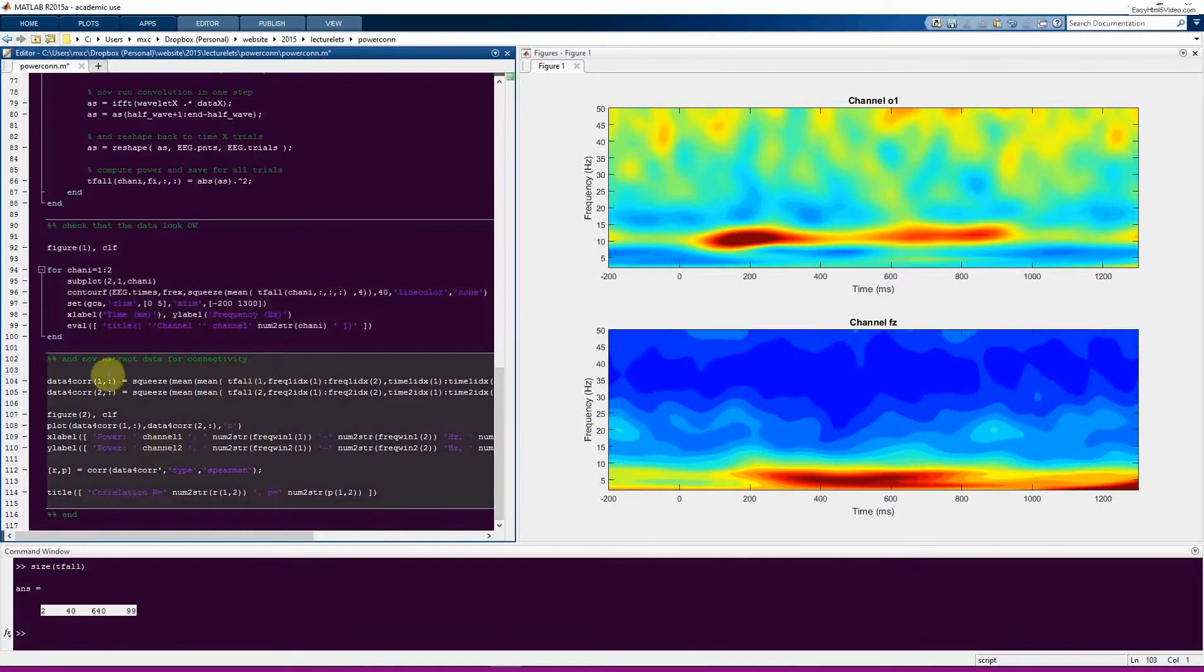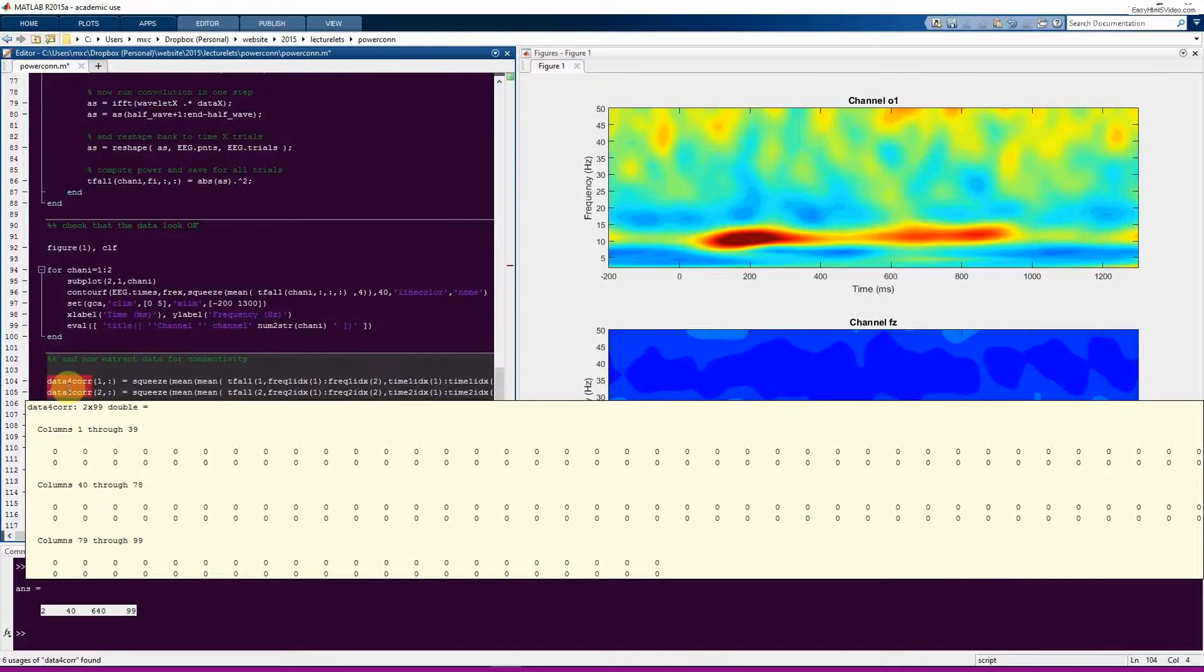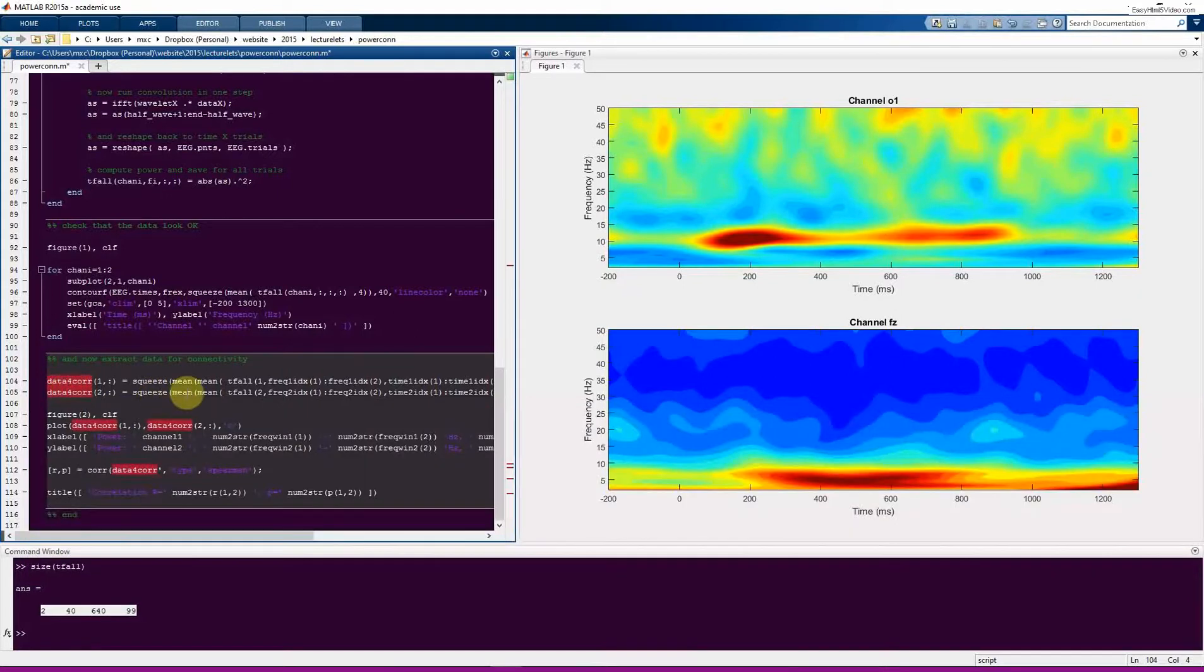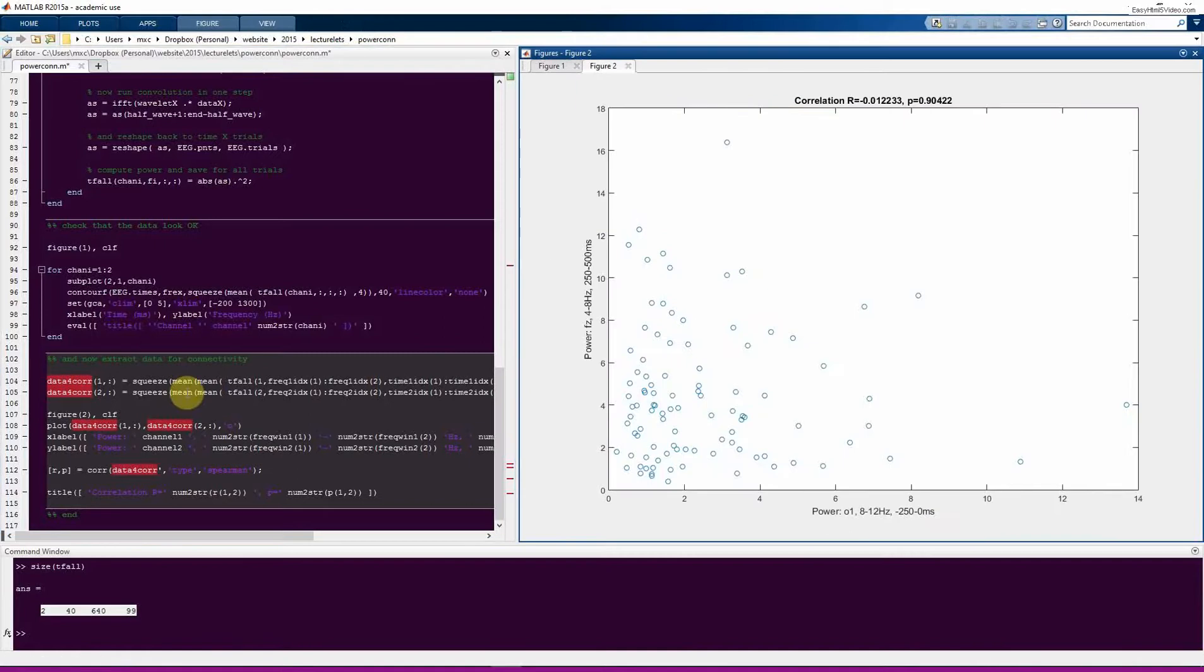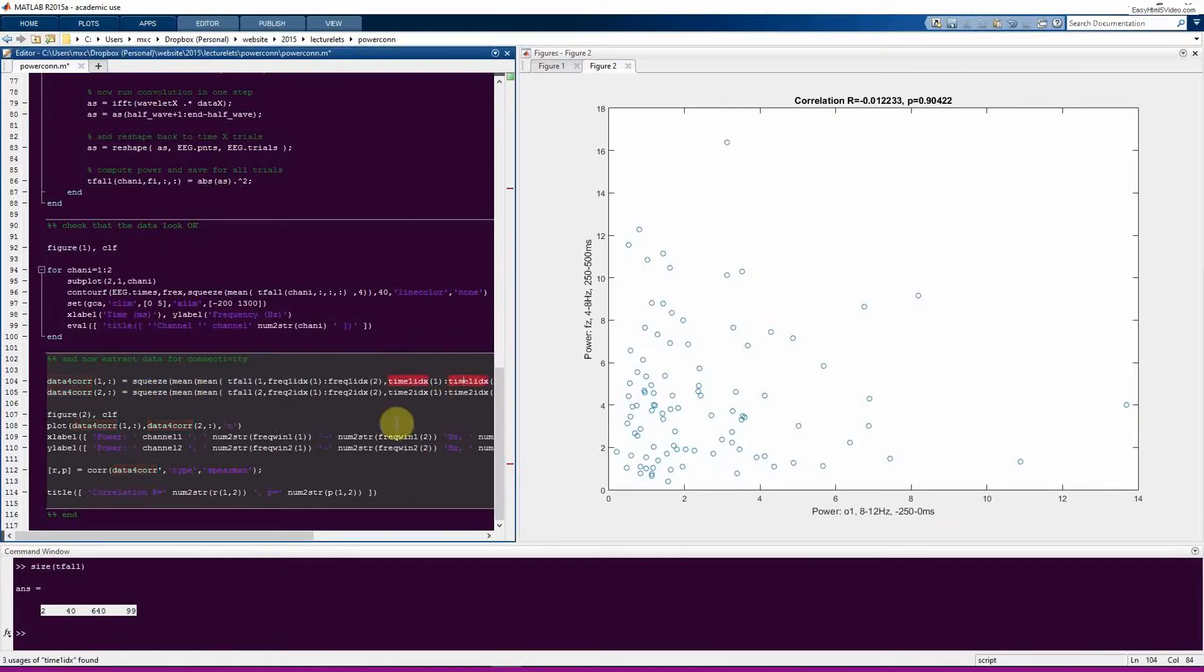So here now we extract the data for the correlations. And this is like that matrix that I showed in that slide. So it's initialized now, so it's all zeros. But you can see it's two rows for two channels and then 99 columns for 99 trials. So this very long line of code just extracts all the data from that time frequency window for the two channels. You can look through this more carefully on your own. Here we plot the data and then run the correlation.